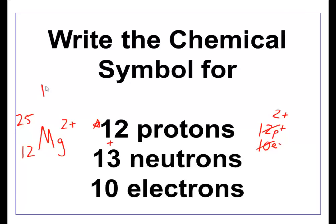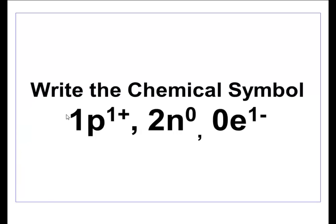If you're getting this, guys, you are doing great. Now I'm throwing a little curveball — I've listed everything horizontally this time. Write the chemical symbol for something that has one proton, two neutrons, and zero electrons. One proton is element number one: hydrogen. One plus two neutrons tells me there are three particles in the nucleus — three atomic mass units. For the charge: I have one proton and zero electrons. Obviously it's going to be a one positive charge.